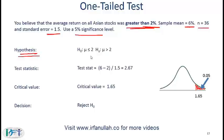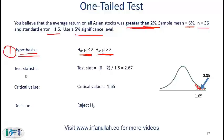Here, if you believe the return is greater than 2%, that is the alternate hypothesis. The equal-to sign must always be in the null. So the null is mu is less than or equal to 2. Step 1 is coming up with the hypothesis; step 2 is the test statistic.